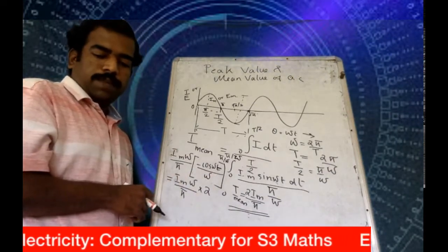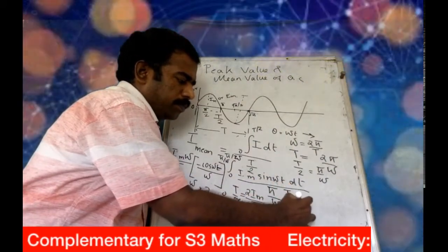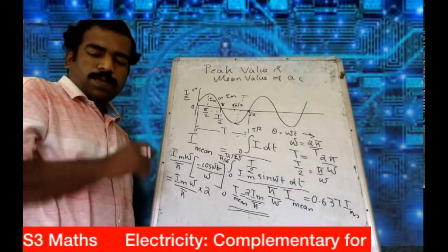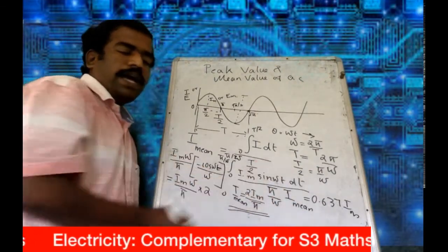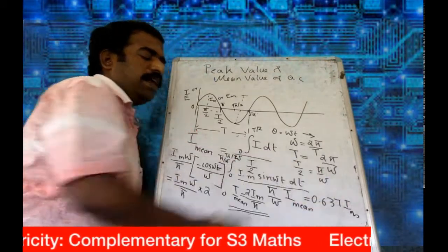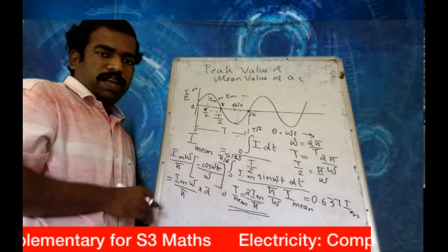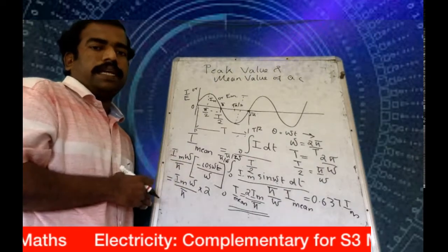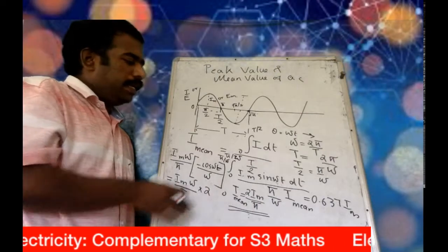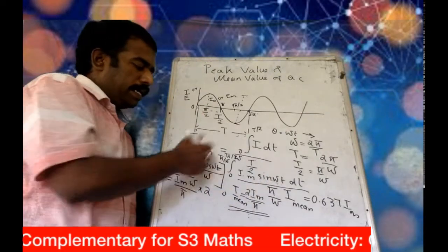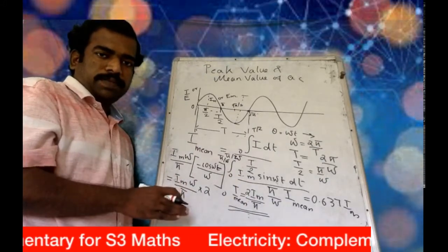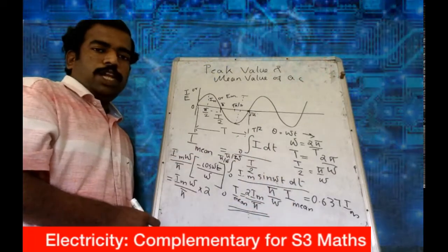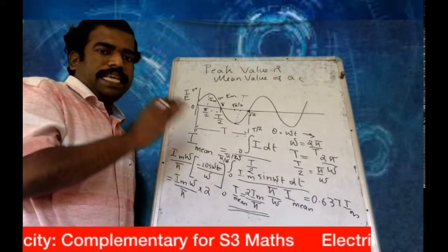Taking 2/π gives 0.637, so i_mean = 0.637 Im. Similarly, the mean value of the EMF e_mean is 0.637 Em. This is the relation between the mean value and the peak value. To summarize: take the half cycle, divide by T/2, substitute the period expression, and integrate to get i_mean = 0.637 Im.